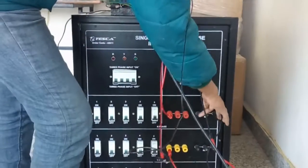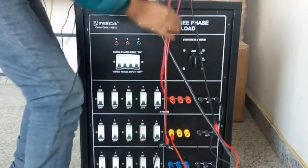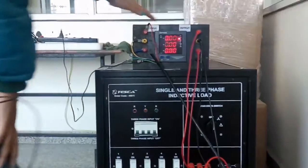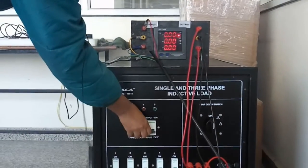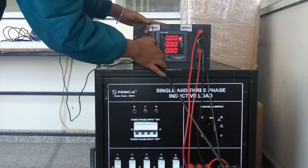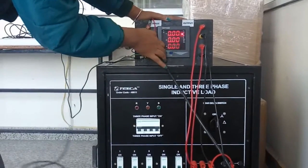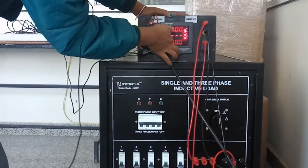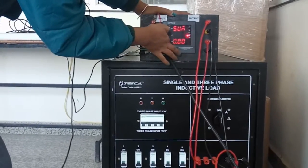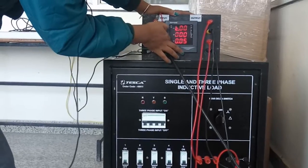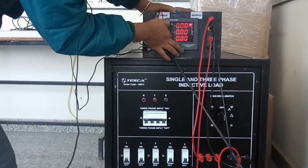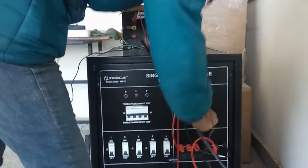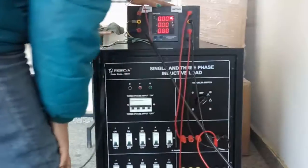Select any neutral and connect it to the neutral terminal. Now turn on the kit. We have turned on the kit. Now we will select the switch. I have selected star connection.